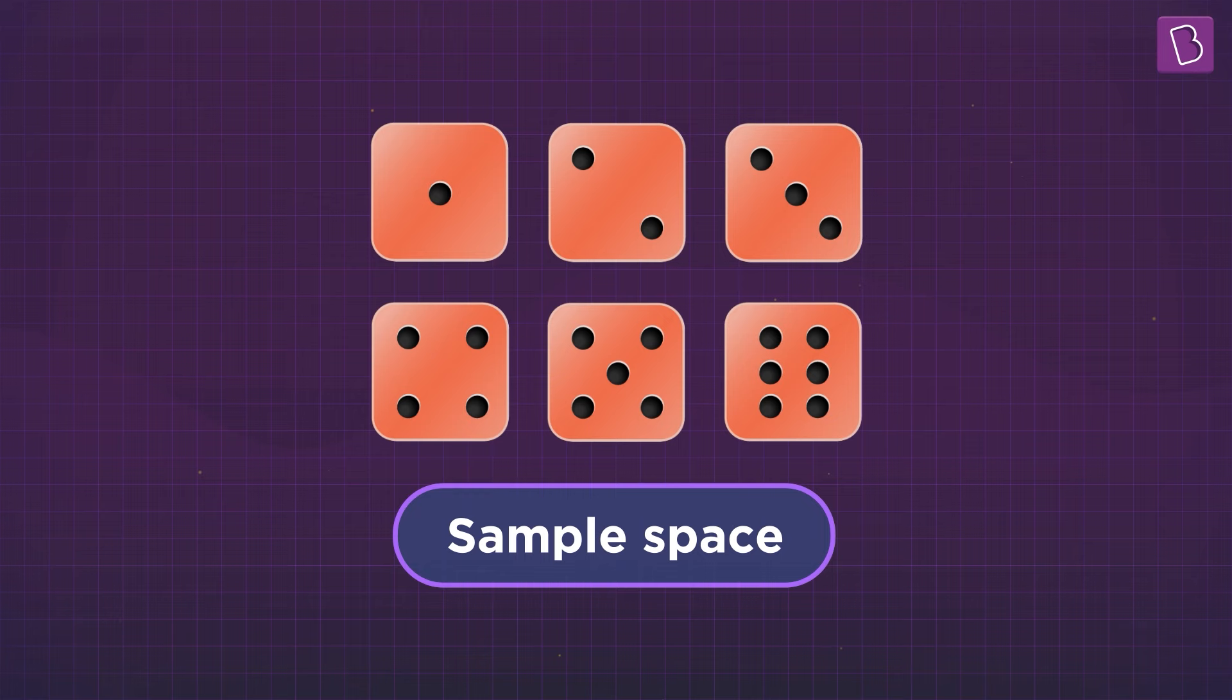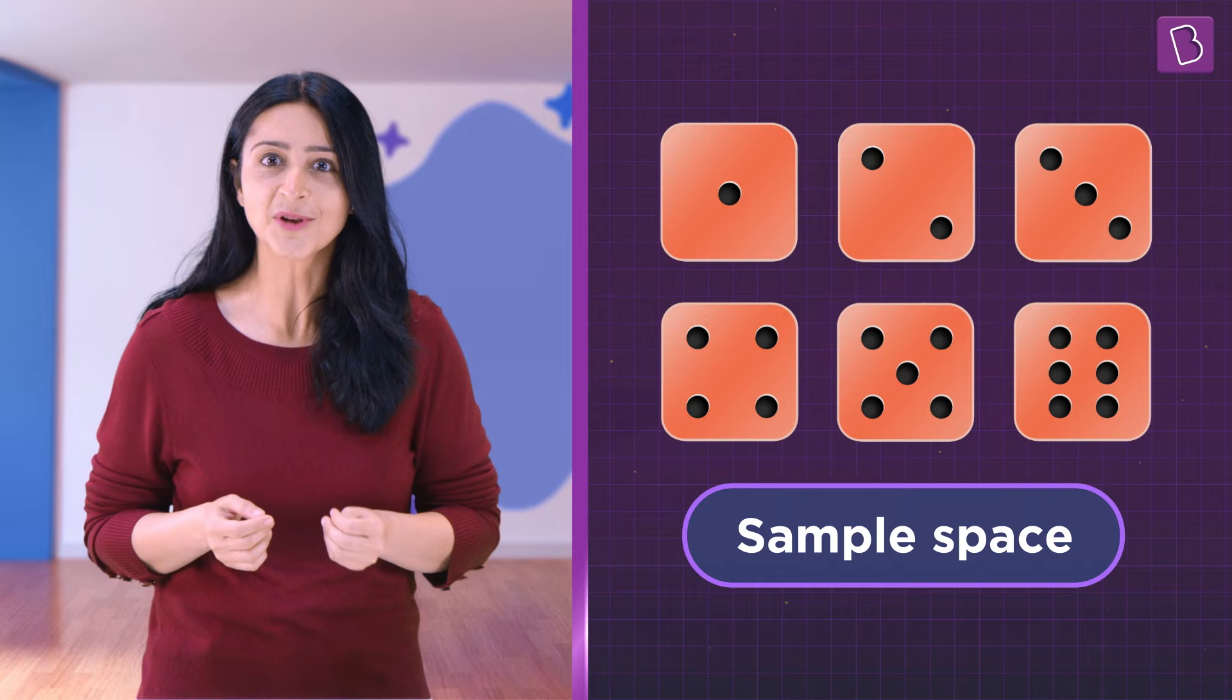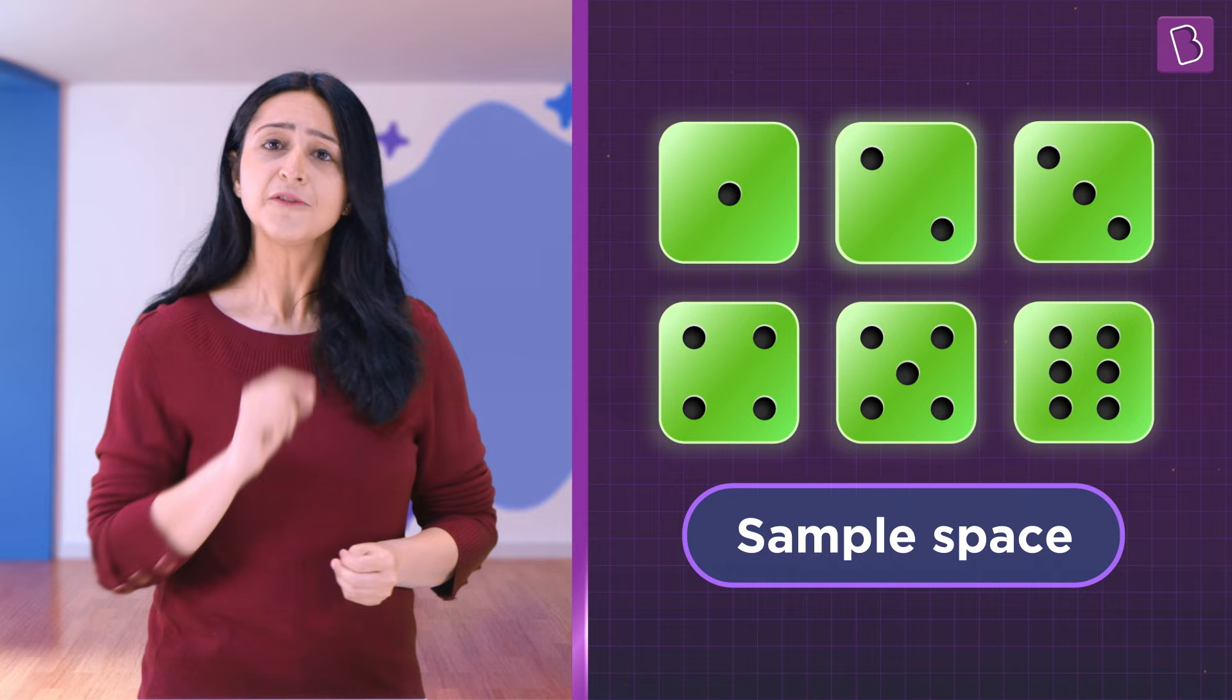We may not be able to predict which outcome we are going to get in a particular roll, but finding the probability of each will help us know the likelihood of an outcome. In this case, there are six possible outcomes in total. A fair dice can give us any of the six outcomes.